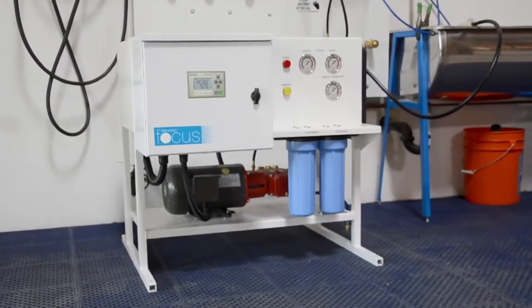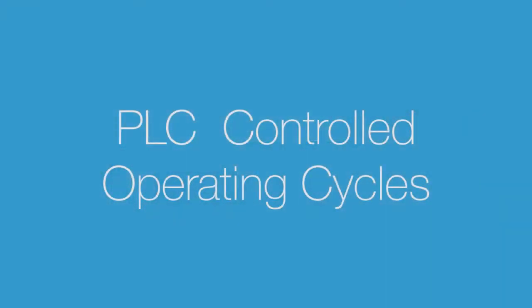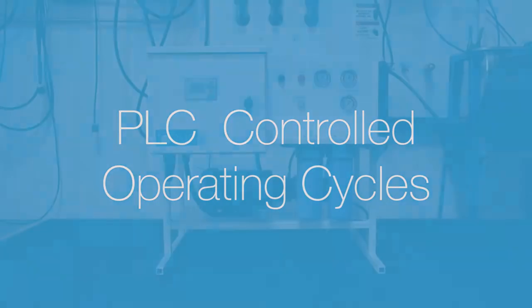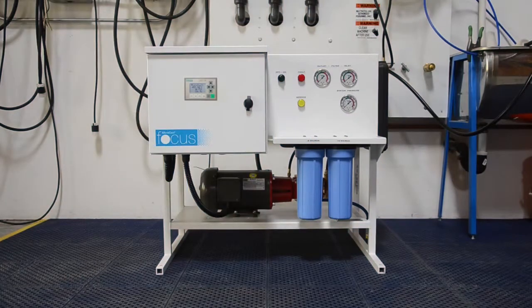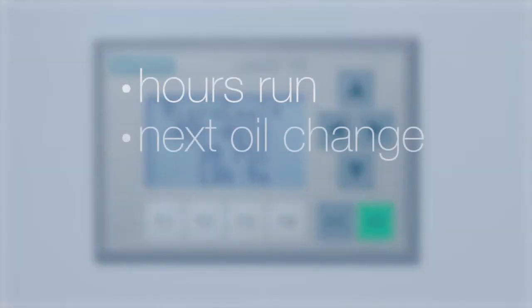The UL-listed control panel also features a PLC that controls the drain, flush, and operating cycles of the pump unit. The PLC interface panel mounted in the door displays all of the current information about the pump unit, including hours run, time-to-next oil change, pressure, and additional information to help in the maintenance and operation of the system.